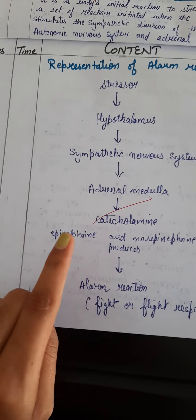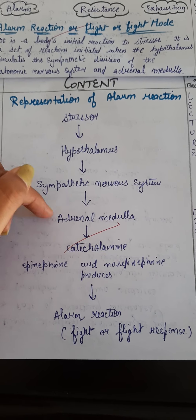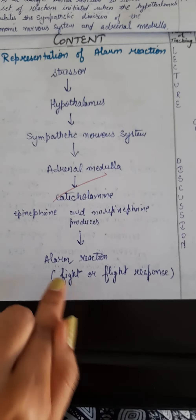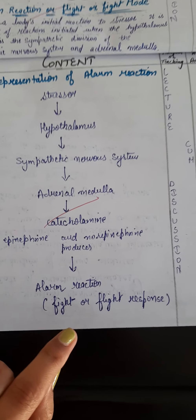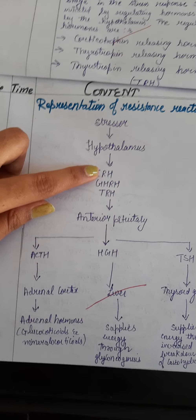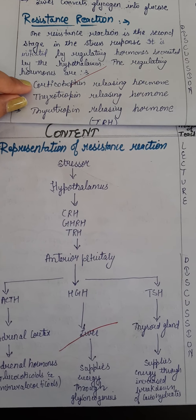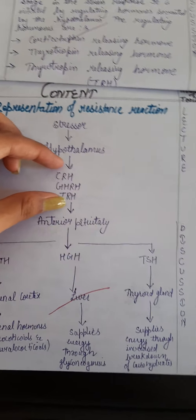Epinephrine and norepinephrine are secreted by the adrenal medulla and produce the fight-or-flight response — meaning you either cope or do not cope. If the person can cope, then the stress resolves. If they are unable to cope, it shifts to the next stage: the resistance stage. In the resistance stage, the hypothalamus secretes three hormones: corticotrophin-releasing hormone, thyrotrophin-releasing hormone, and growth hormone.